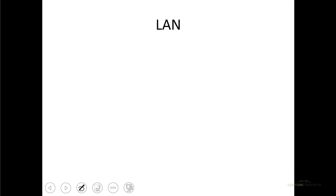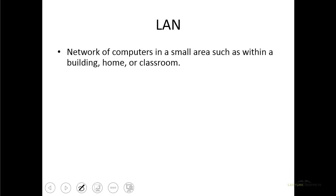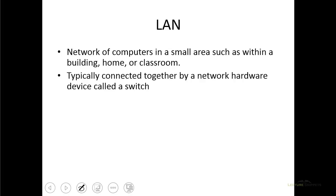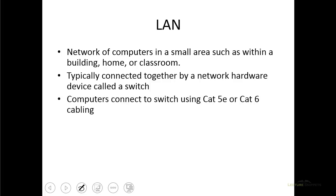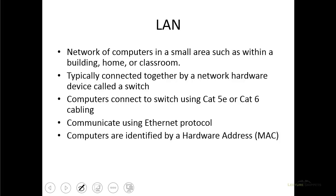Let's recap what we've covered about the local area network. A LAN is a network usually confined to a building or workplace. The key hardware includes the switch, which allows us to connect multiple computers — from two to hundreds — on the same local area network. We also talked about the Ethernet cable, which can be Cat5, 5e, or Cat6, and allows computers to plug into the switch and communicate together. The protocol used on a local area network is called Ethernet — a set of standards for communicating back and forth. We also covered the MAC address, which uniquely identifies all computers on the network, allowing data to be sent from one computer to another correctly.